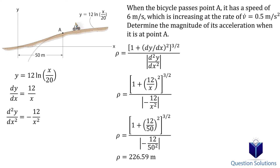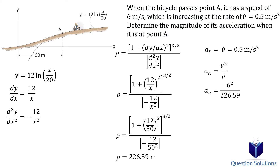Now we can find the tangential acceleration and normal acceleration. The tangential acceleration is 0.5 meters per second squared, since it is given to us in the question. The normal acceleration can be found using this formula. The velocity is given to us in the question and we already found the radius. Solving gives us the normal acceleration.